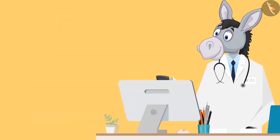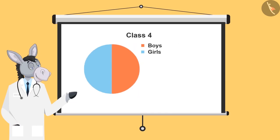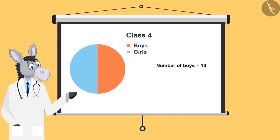Very good. Now let's look at one more example. Now all of you, look at this chart and think if there are half boys and half girls in a class, and the number of boys is 10, then what will be the number of girls?